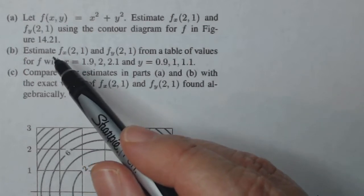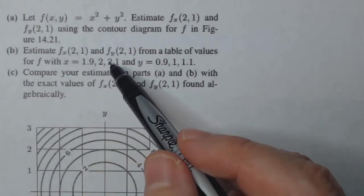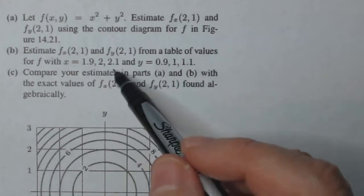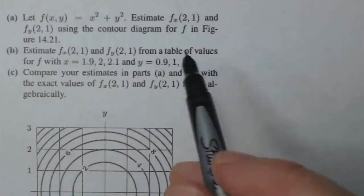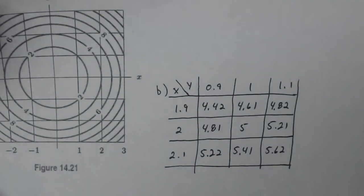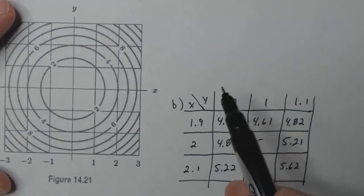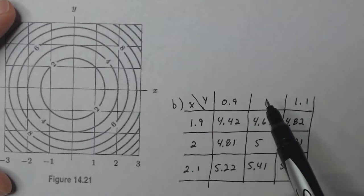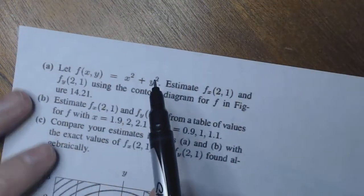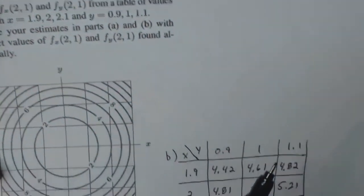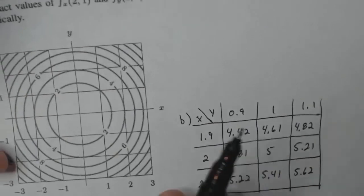And then part b says estimate f sub x at two one and f sub y at two one from the table of values. So you get these three x values and these three y values, and I've already put the table together. So you take each of these ordered pairs and you plug them into your original function here and you build the table.